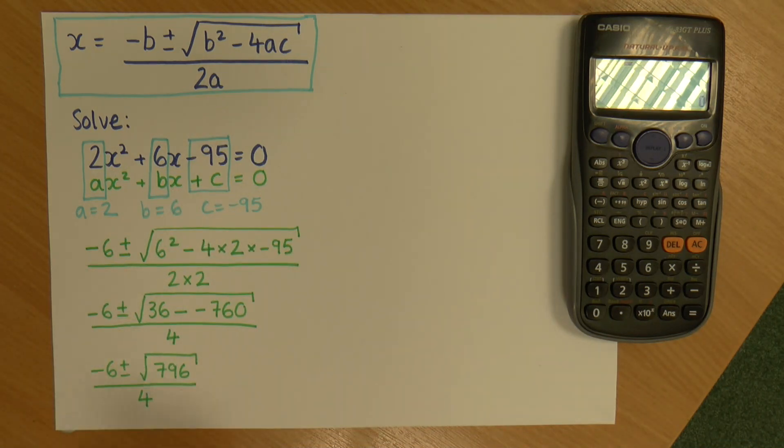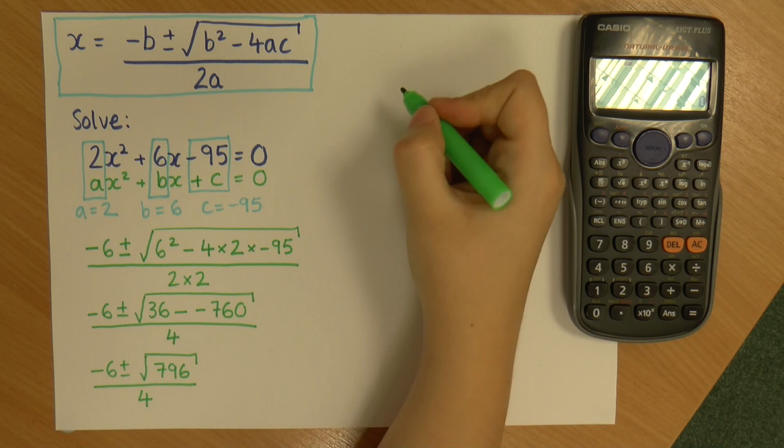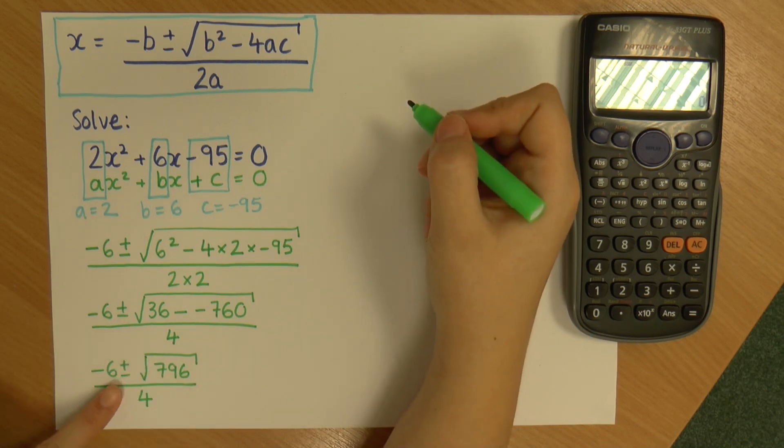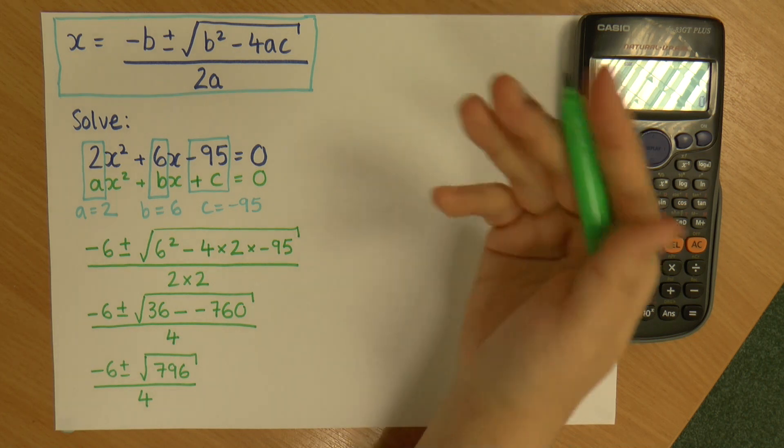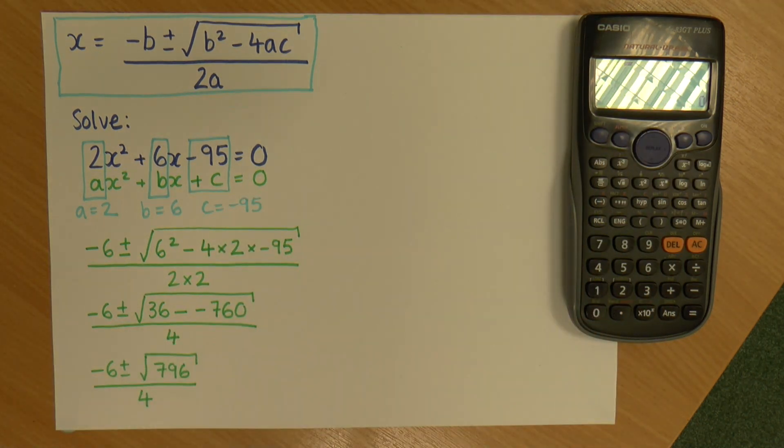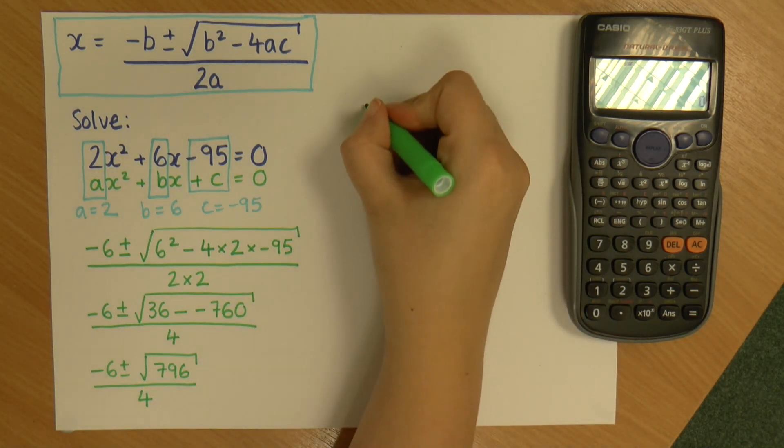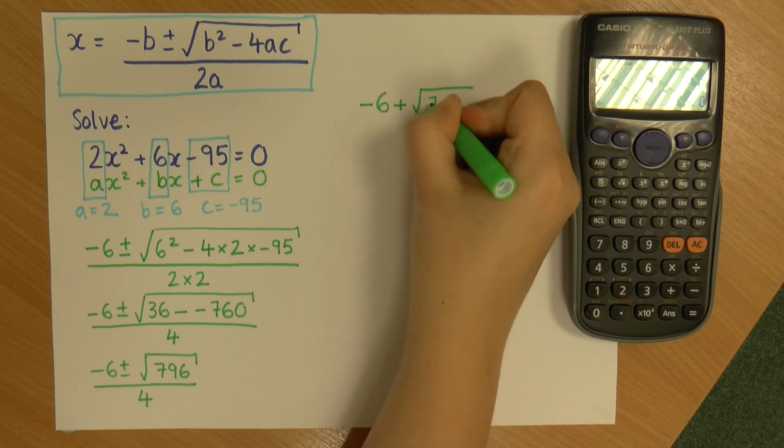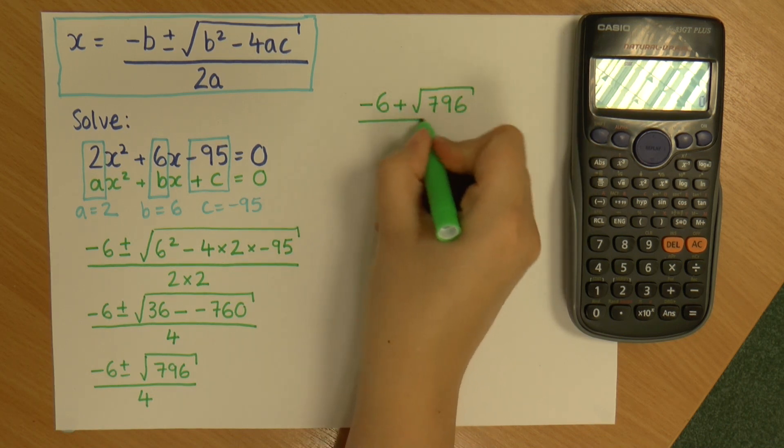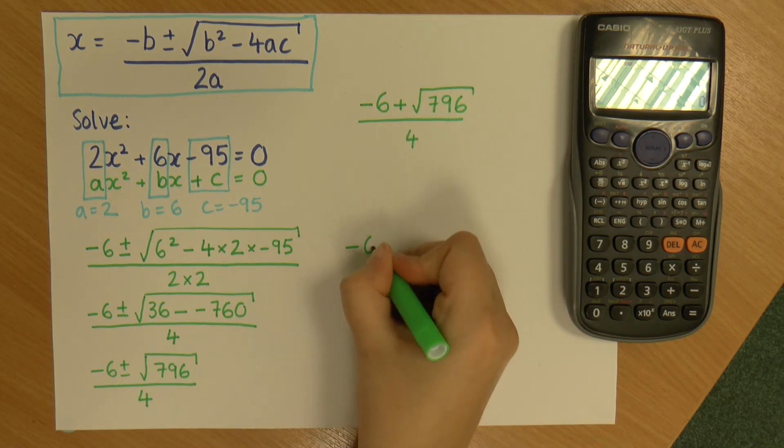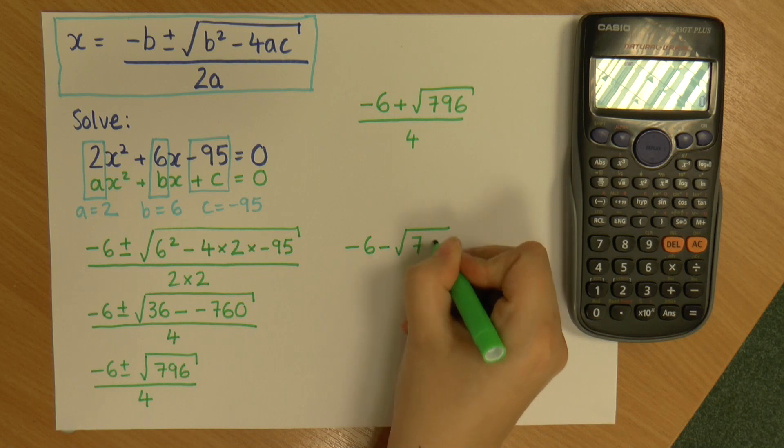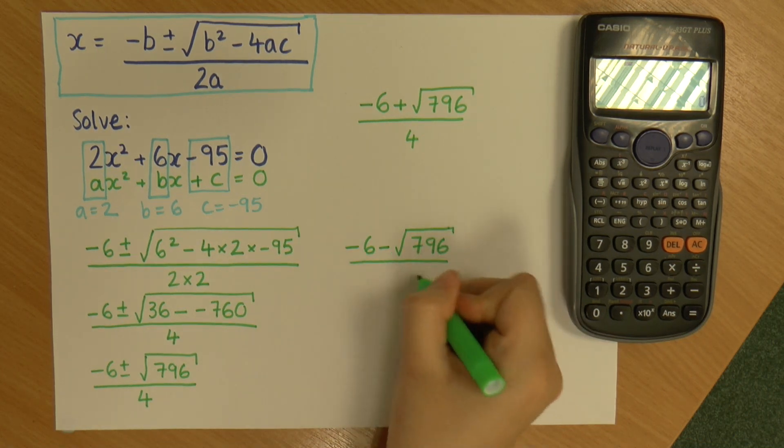I can now use this to calculate my values of x. Now remember, it's a quadratic equation, which means there are two values of x. So the way we do it is you'll notice that there is a plus or minus sign here. That means I have two calculations to do, one where that is a plus and one where it is a minus. So my two calculations are minus 6 plus the square root of 796 divided by 4, and minus 6 minus the square root of 796 divided by 4.